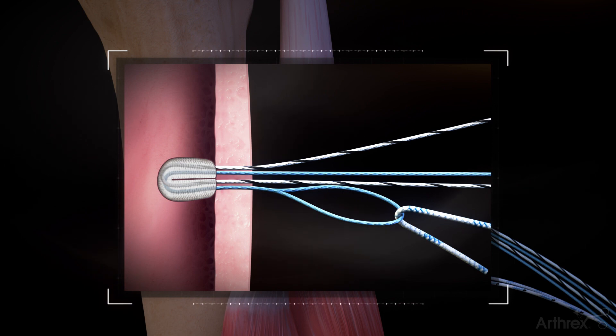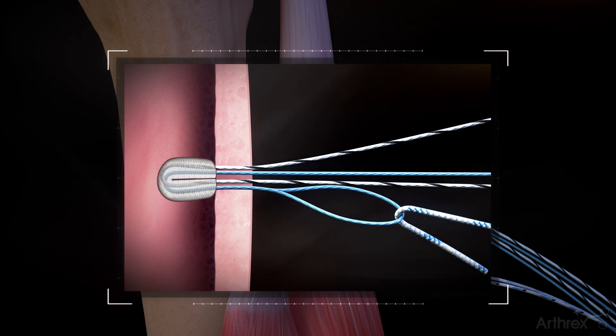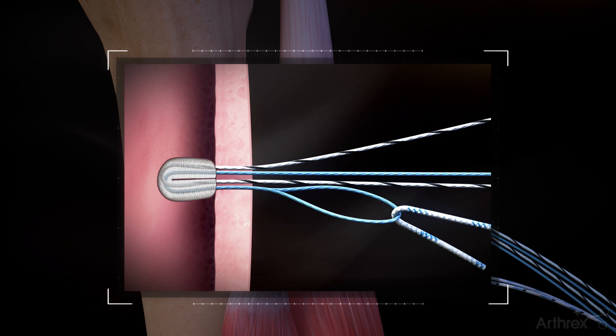Shuttle one of the suture tag limbs through the button using one of the fiber links. Use slight tugs once the suture meets the button sheath.